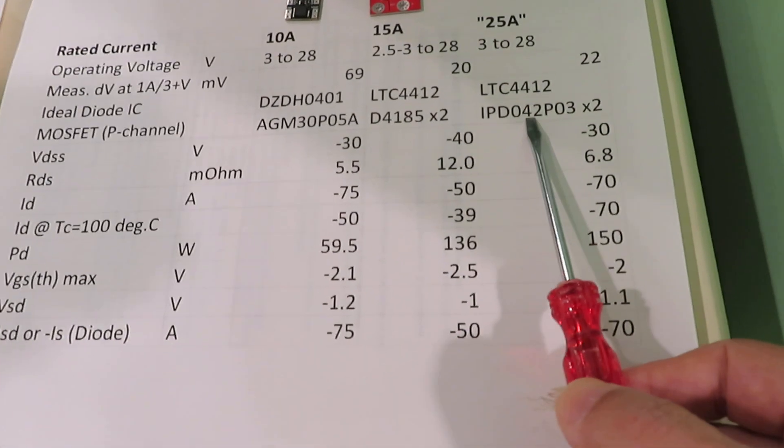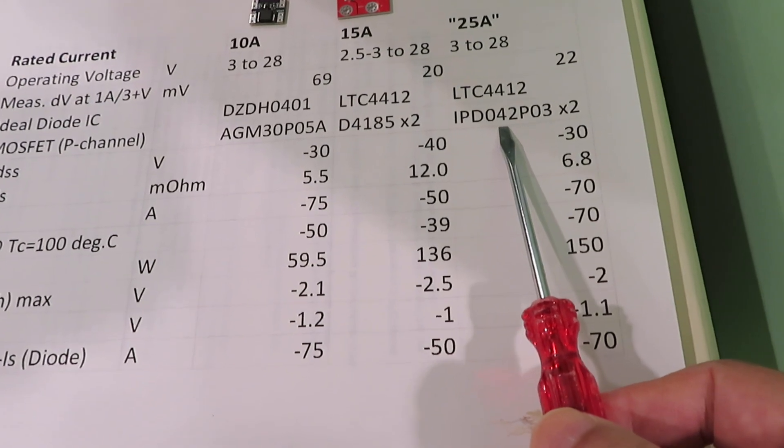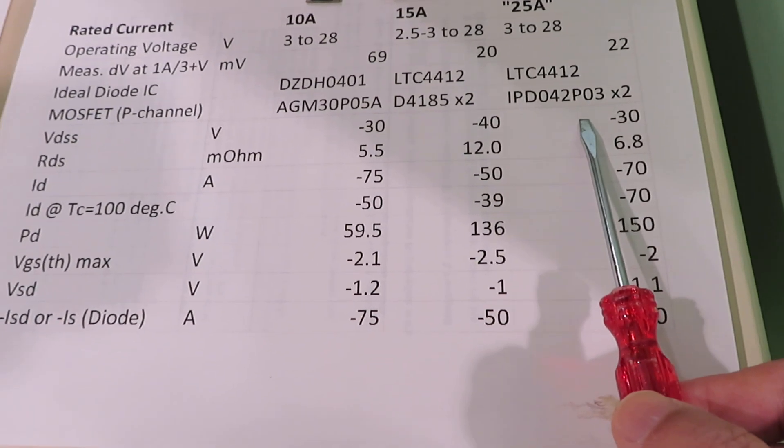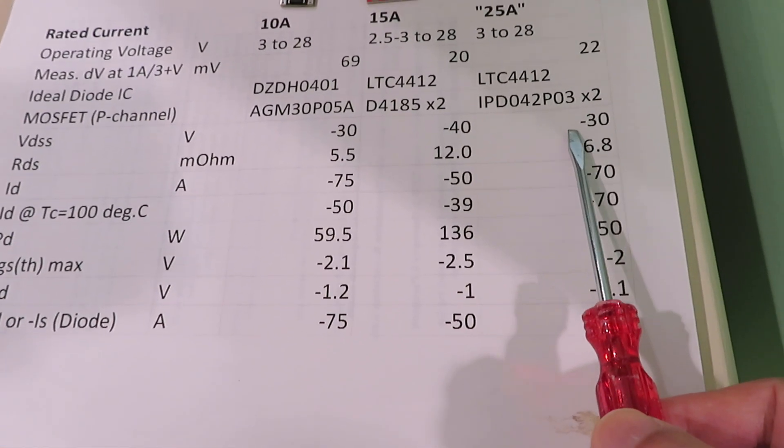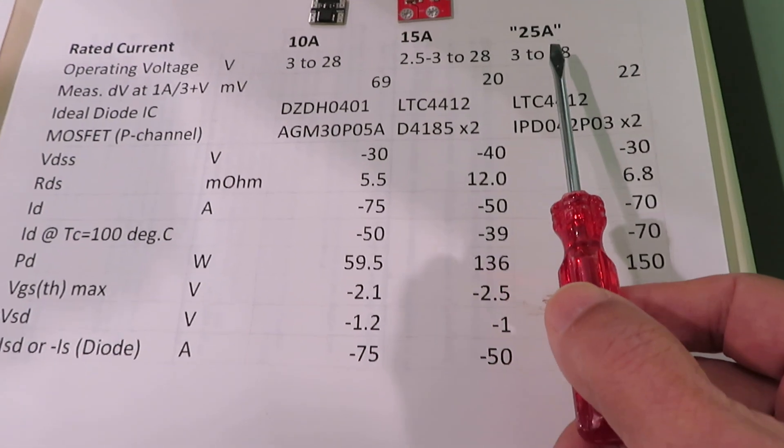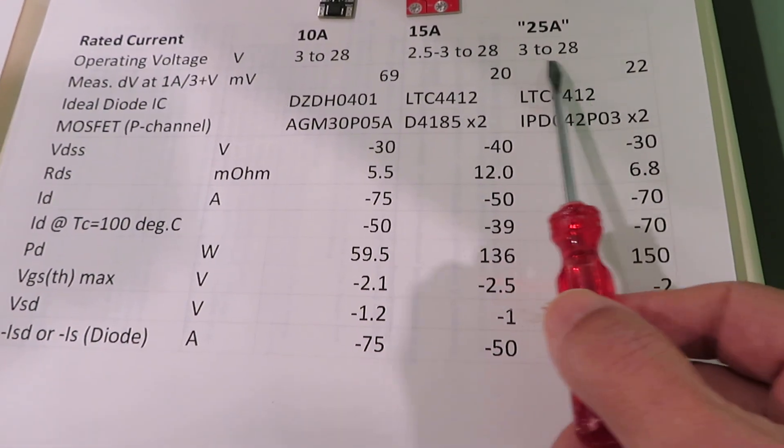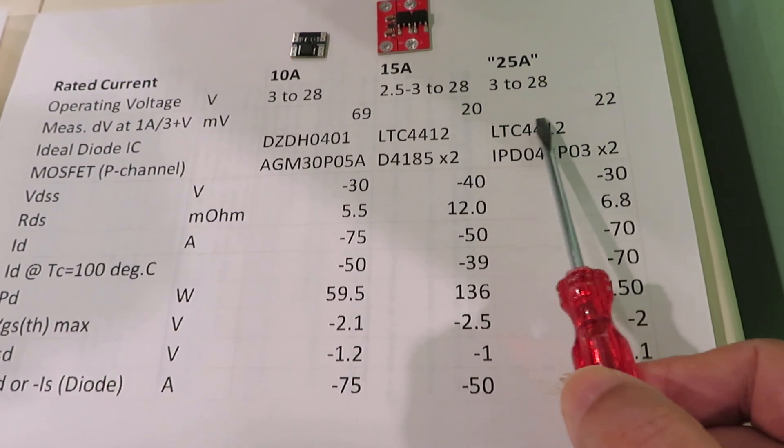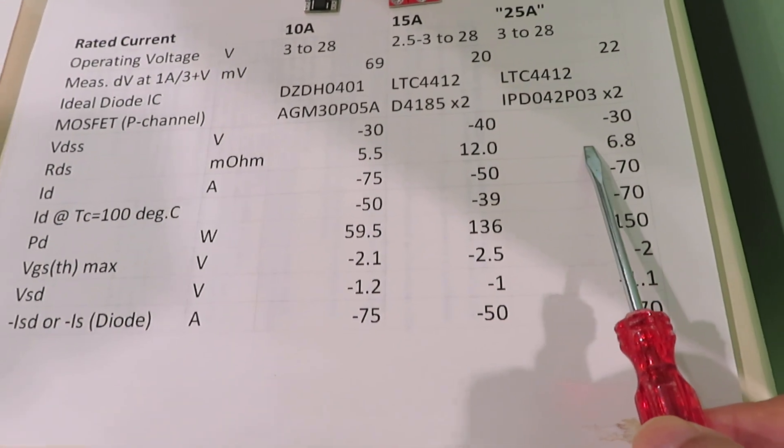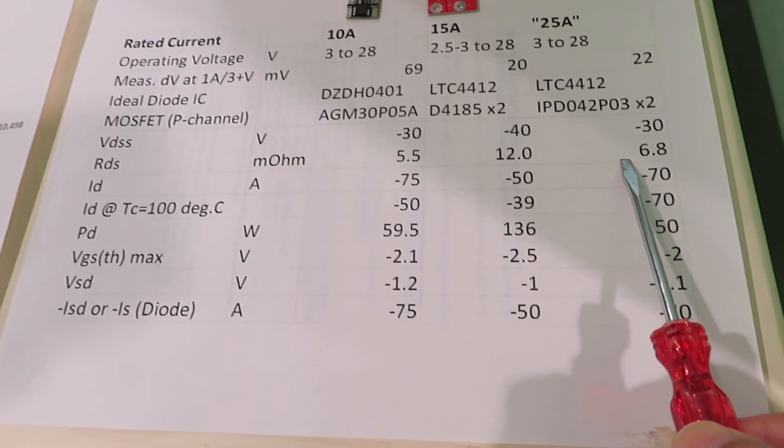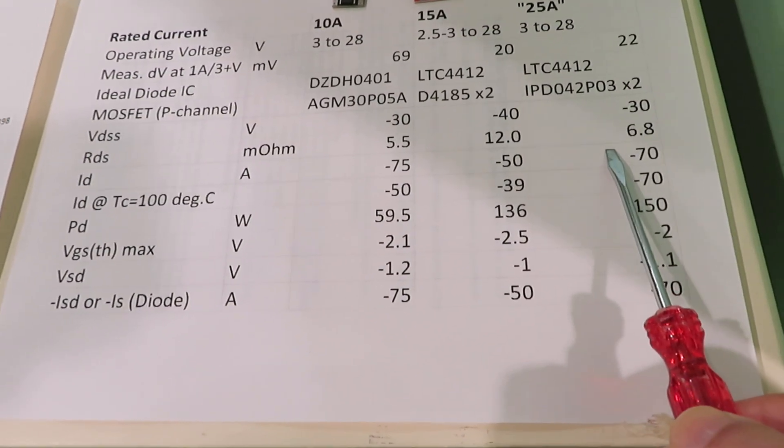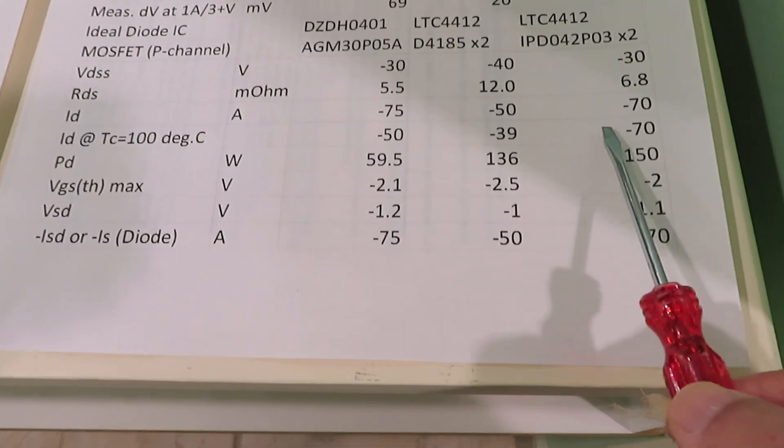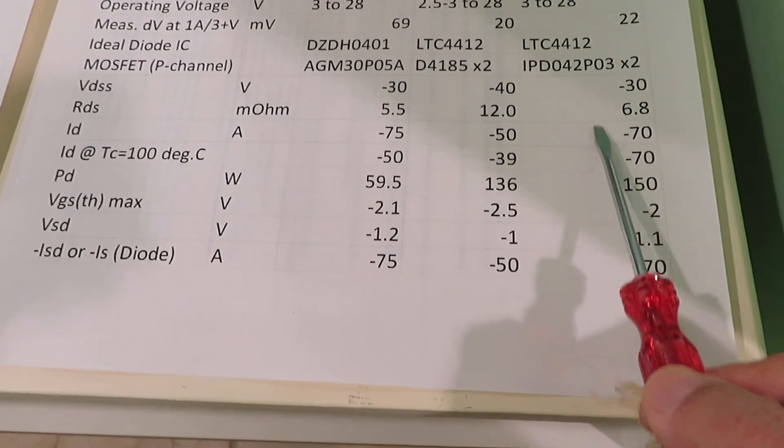This MOSFET IPD042P03 has VDSS of 30 volts and I only need 25 volts but it could run to 28 volts. The RDS is 6.8 ohm. These are the other characteristics of the MOSFET that I'm not going to go through one by one.